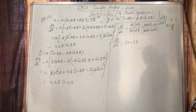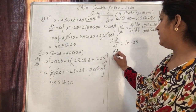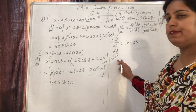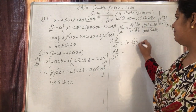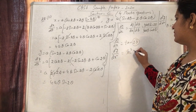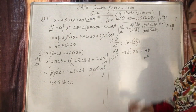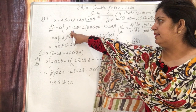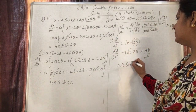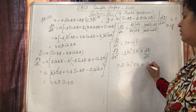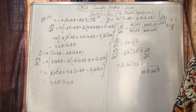Now for the second derivative d²y/dx², we differentiate dy/dx = tan2θ with respect to x. Since the function is in θ, we use: d²y/dx² = (d/dθ)(dy/dx) · (1/(dx/dθ)). So d²y/dx² = 2sec²2θ · 1/(4aθcos2θ).